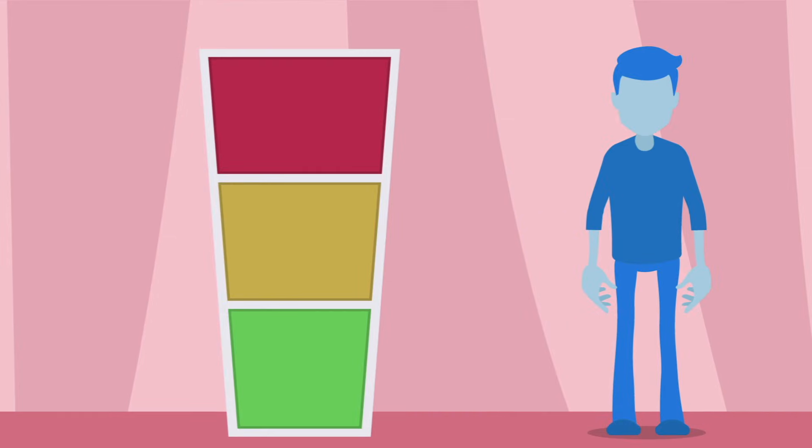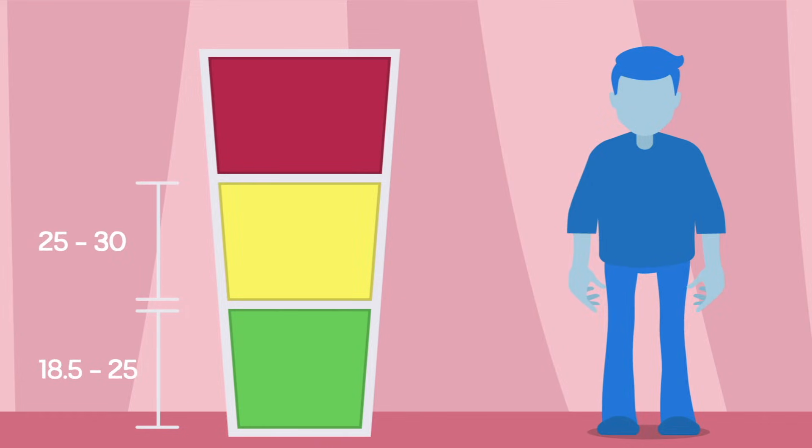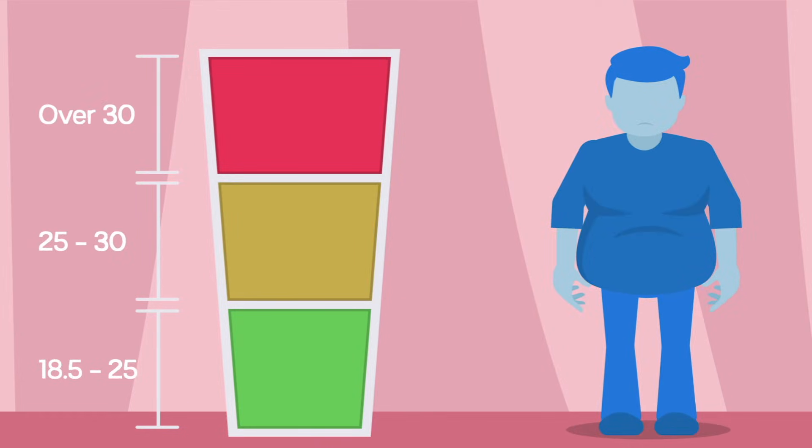A BMI between 18.5 and 25 is considered ideal. Over 25 is considered overweight, and over 30 is considered obese.